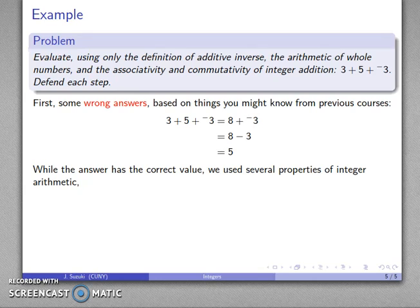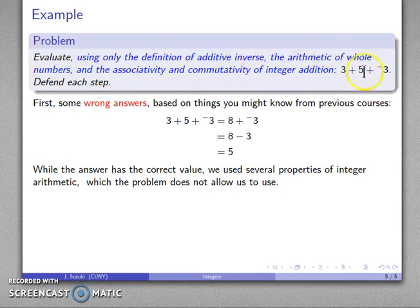And while this is the correct value, we used a number of properties of integer arithmetic which the problem as stated doesn't allow us to use. We have to limit ourselves to these things. The rules of the game are we're allowed to use these steps and nothing else. So this answer is incorrect.